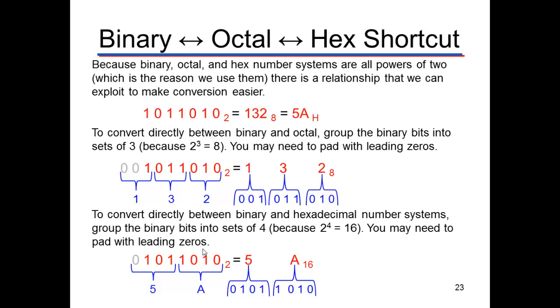So if you want to go directly between binary and octal, you have to group the binary bits into sets of 3. Think about that, 2 cubed is 8, so that's why we use that. We use 2 to the 4th, which is 16 for hexadecimal.